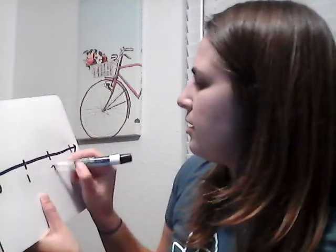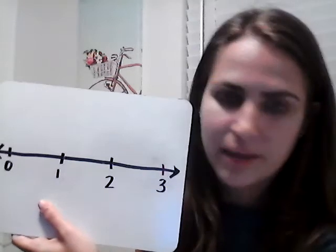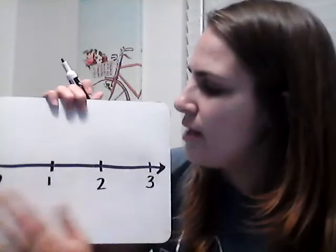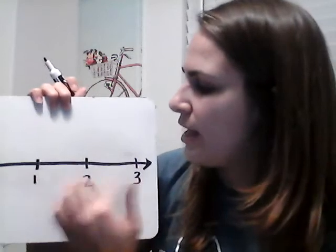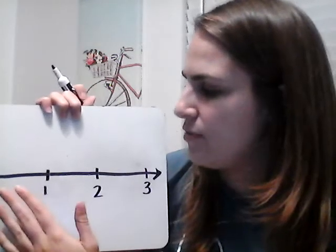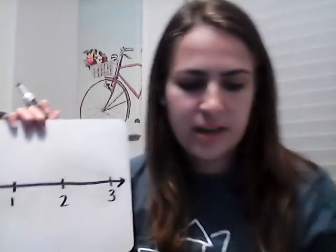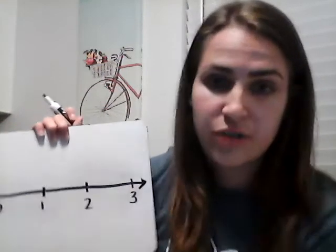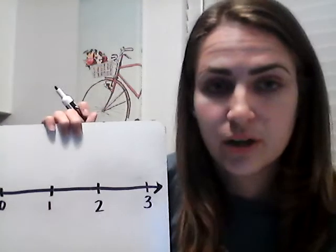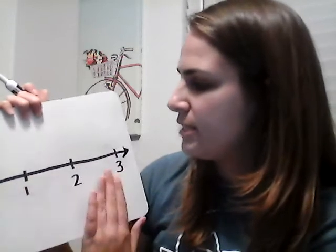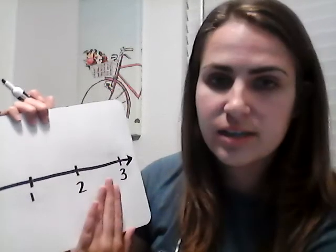We'll label 1 and 2 where they belong — 1 is about here and 2 is about here. It might not be perfect and that's okay. Now we still need to finish creating our number line by putting in the fractional units. In this data set we have halves, fourths, and eighths, so we're going to use the largest fractional unit, which is eighths. We're going to split each whole on our number line into eighths.